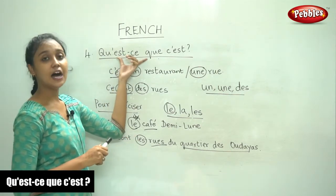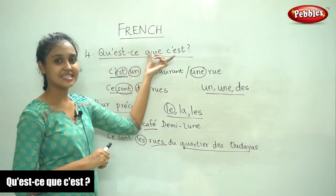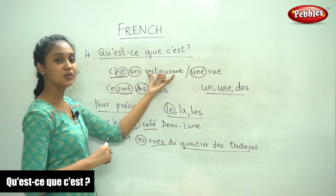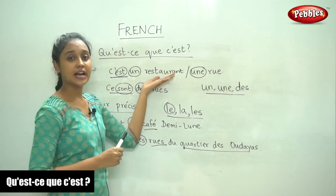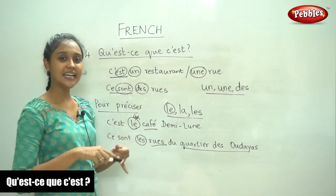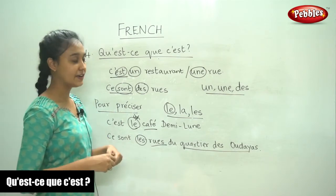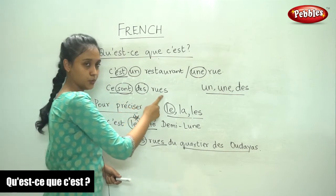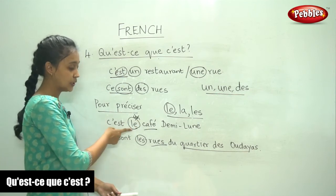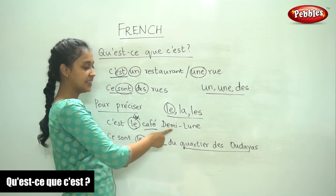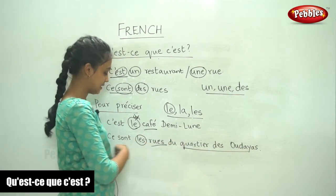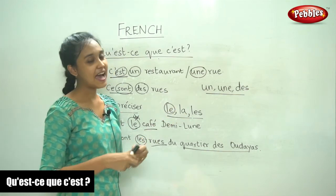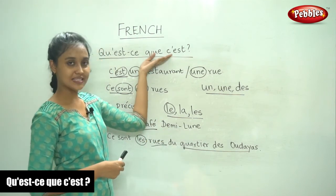So, what have we learnt here? We have learnt how to answer the question 'Qu'est-ce que c'est?' — What is it? We would answer with either 'C'est' or 'Ce sont,' depending on whether the noun is singular or plural. And depending on our answer, we will use either a definite or an indefinite article. Examples of indefinite articles: 'C'est un restaurant,' 'C'est une rue,' 'Ce sont des rues.' For precise answers we use the definite article: 'C'est le café Demi-Lune,' 'Ce sont les rues du quartier des Oudayas.' We have learnt how to use the definite and indefinite article in sentences and how to answer this question.